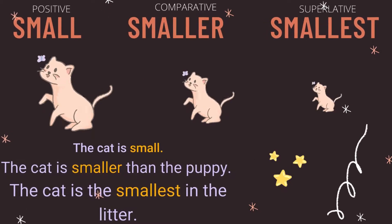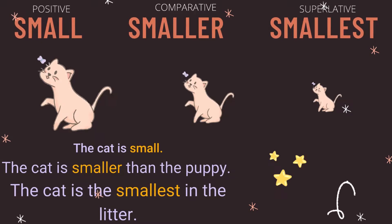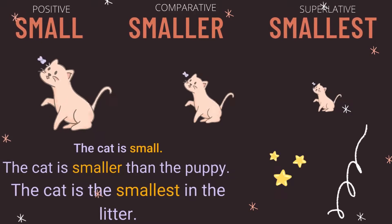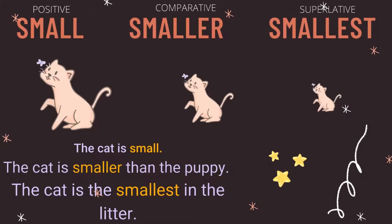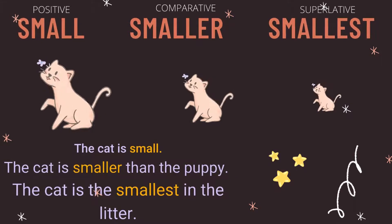Small, smaller, and smallest. The cat is small. The cat is smaller than the puppy. The cat is the smallest in the litter.